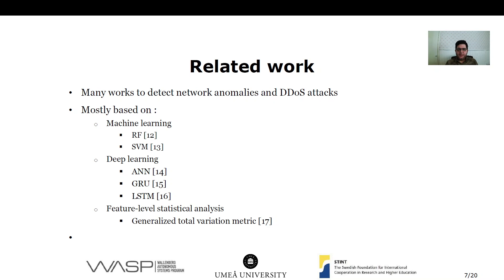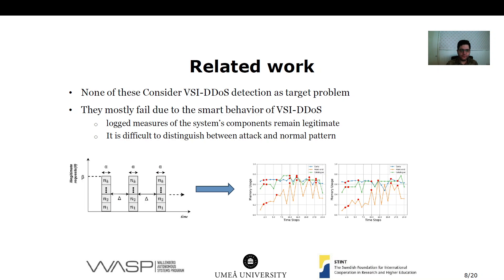There are many works to detect network anomalies and DDoS attacks. Most of those are based on machine learning, deep learning, and feature-level statistical analysis. For machine learning, I can mention random forest and support vector machine. For deep learning, I can mention artificial neural networks, gated recurrent units, and LSTM or long-short-term memory. For feature-level statistical analysis, I can mention the generalized total variation metric. But none of these related works consider VSI DDoS detection as a target problem, and they mostly fail due to the smart behavior of VSI DDoS, because the log measures of the system components during attack remain similar to the legitimate patterns.